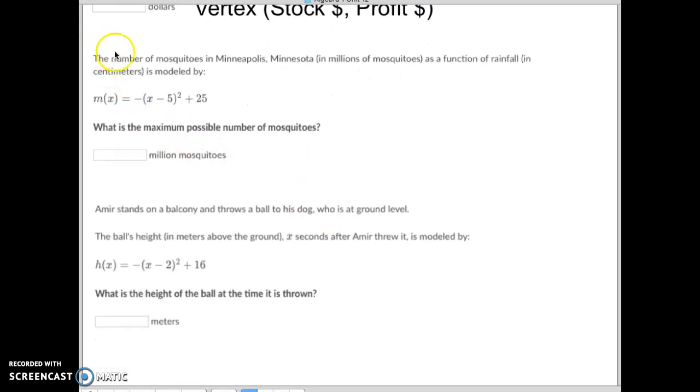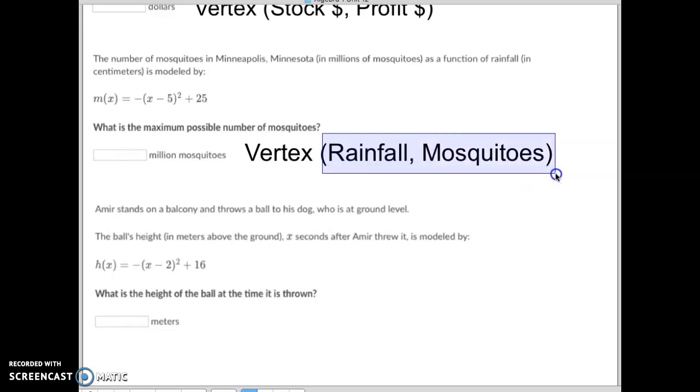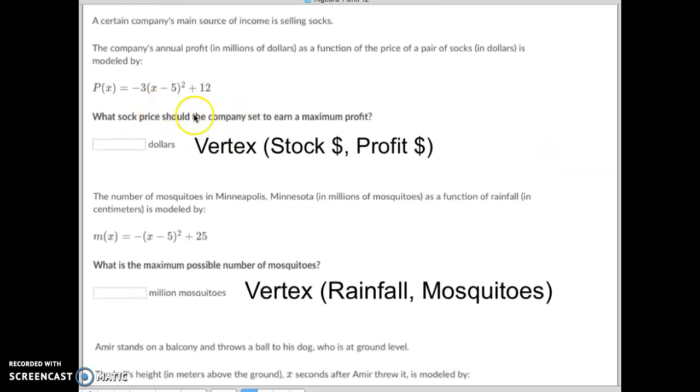This one here says the number of mosquitoes in Minneapolis is a function of how much rainfall we get. Again, this is a vertex question, where the amount of rainfall affects the number of mosquitoes we have, where rainfall is your x-coordinate and mosquitoes is your y-coordinate. So in this one, they are looking for the y-coordinate of the vertex. Sometimes they'll ask for the x-coordinate of the vertex, sometimes they want the y-coordinate of the vertex.